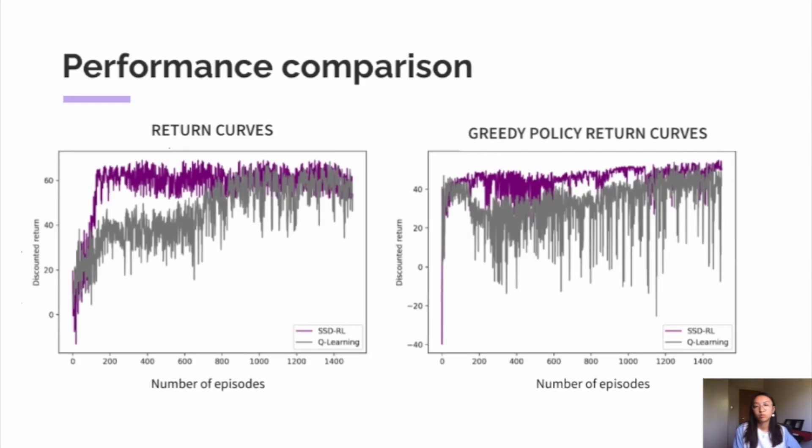We compared our performance against deep Q-learning in the workload distribution environment. And the left curve here compares the return per episode and the greedy policy curve compares the return the agent receives when executing the best possible policy according to the neural network at that specific training episode.